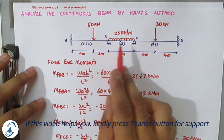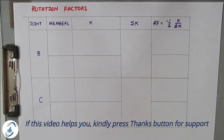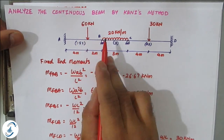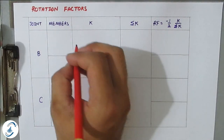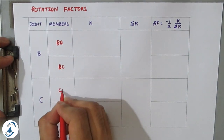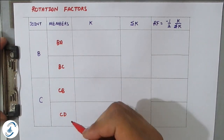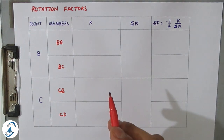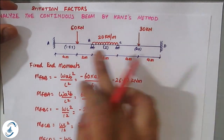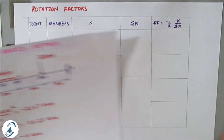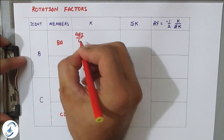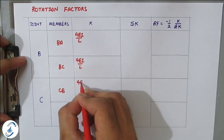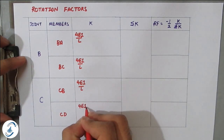In this problem there are two interior joints B and C, since A and D are fixed ends. From joint B, two members come: BA and BC. From joint C, two members: CB and CD. Since both end supports are fixed, stiffness for all members is 4EI/L — there is no modification needed. Modified Kani's method applies when end supports are hinges or rollers, which will be covered in a later video.